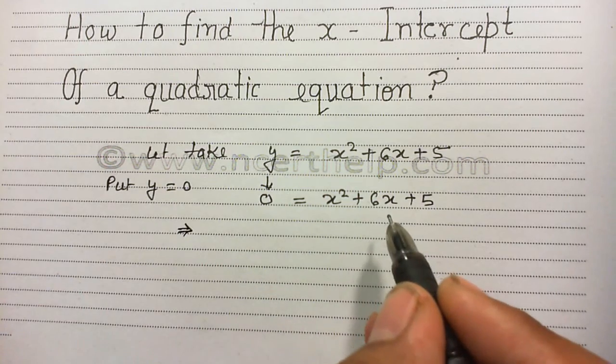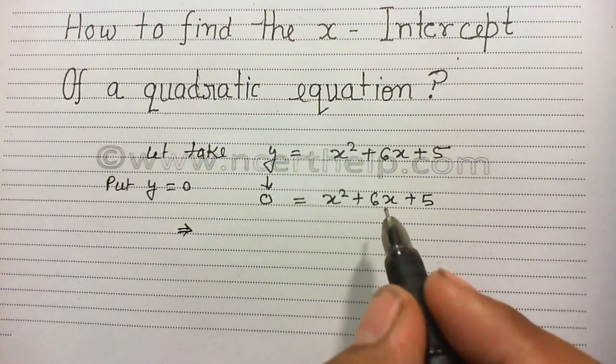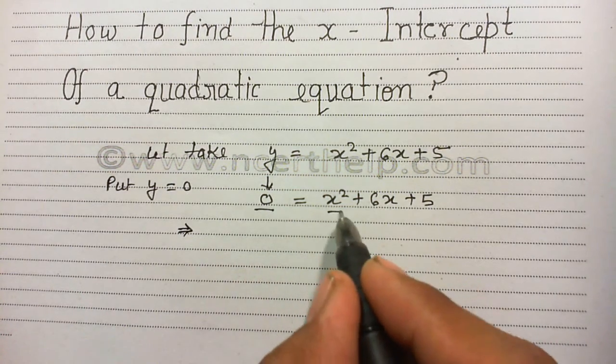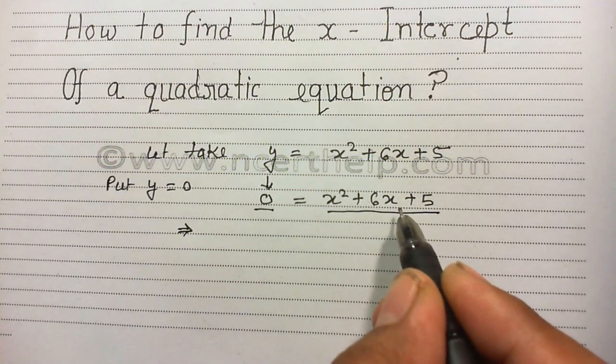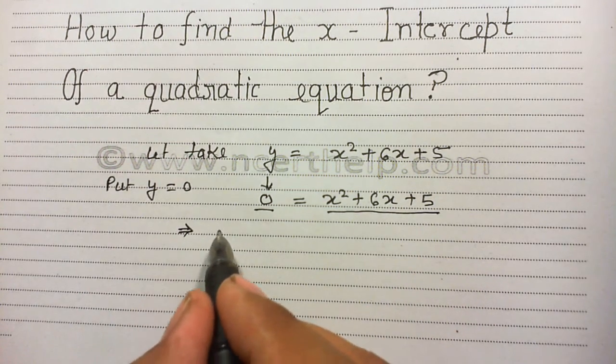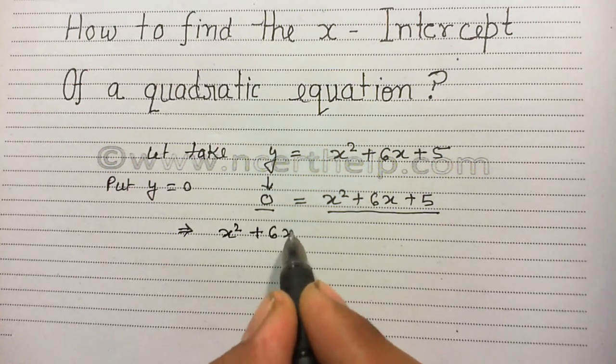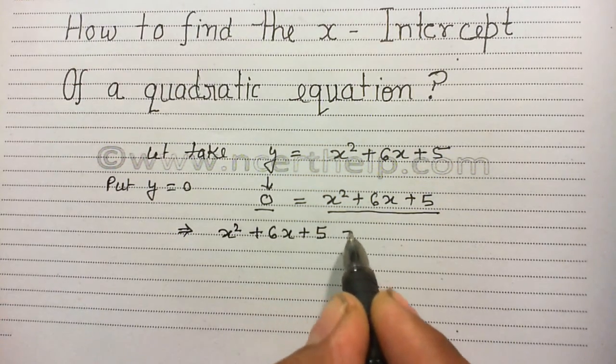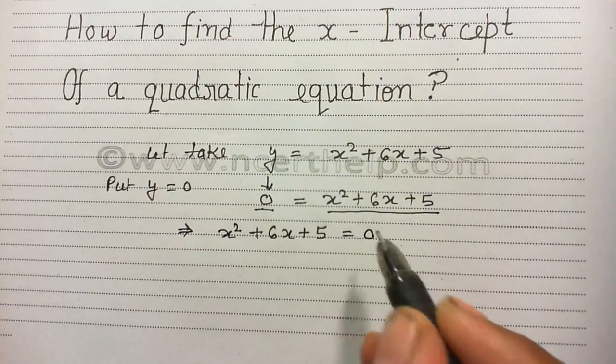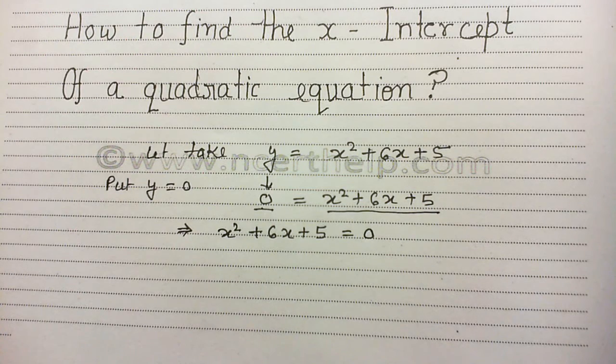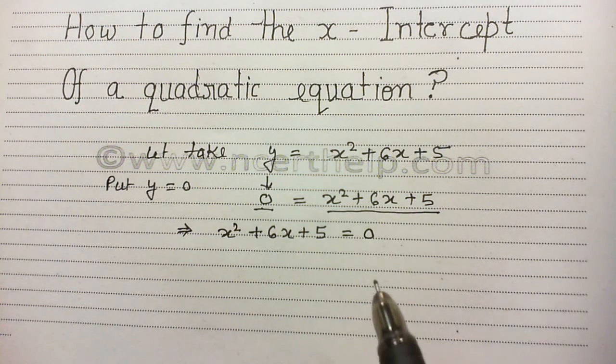To solve it for the value of x, first I will flip LHS and RHS. I will write RHS first. It is x square plus 6x plus 5 gives me 0. Now I can factorize it using various methods. I am using a simple identity method to find the factors of this given equation.